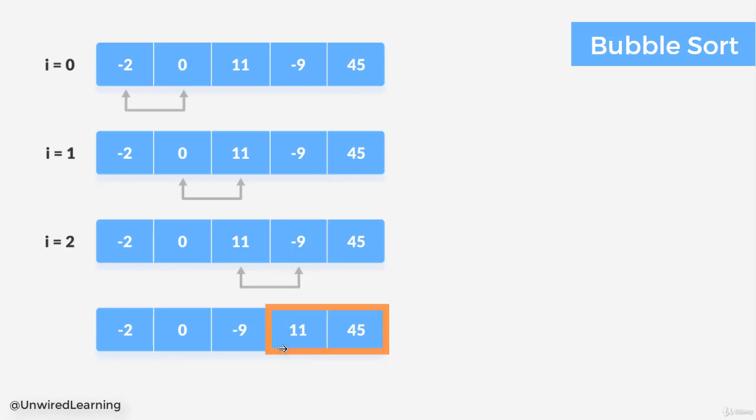Now with our second cycle we have two sorted elements and three are remaining. As we keep on increasing this cycle, this sorted part will keep increasing and the unsorted part will be decreased.